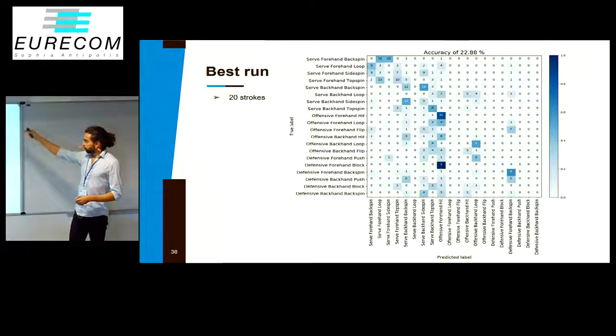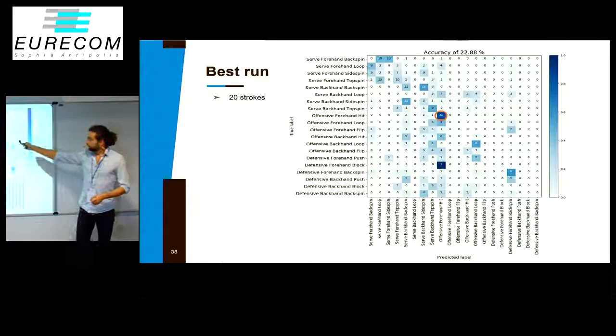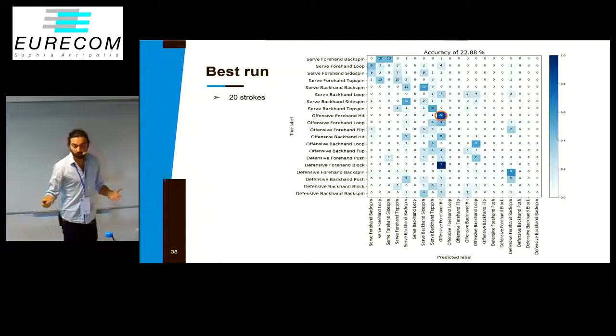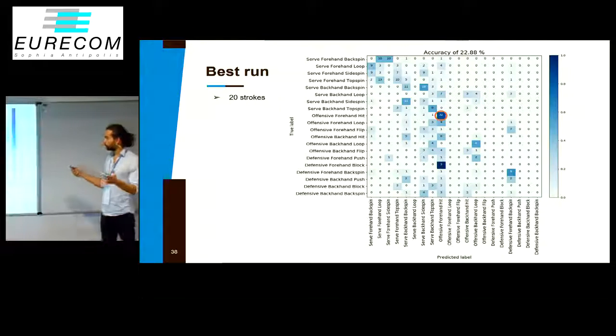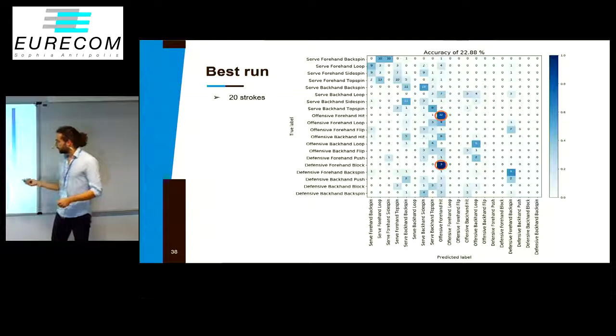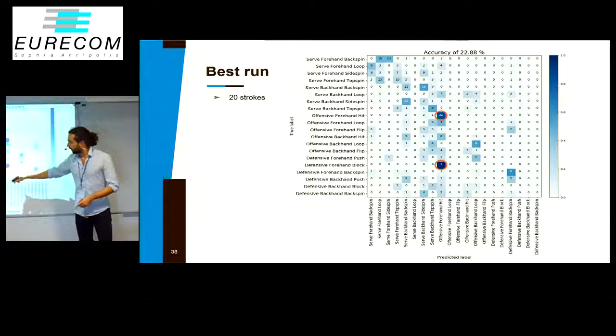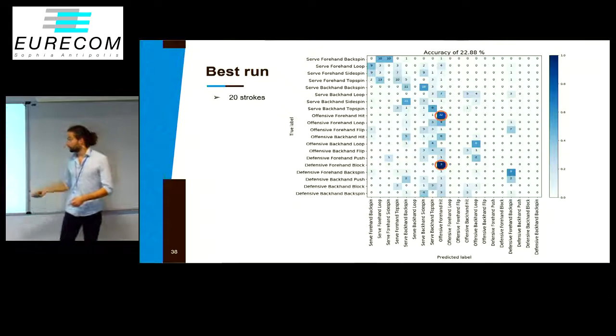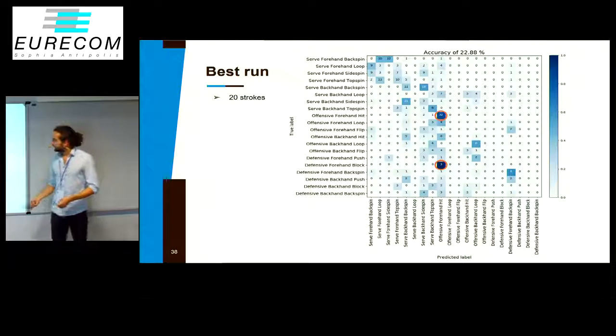Our best run obtained 23%. We've been very good with offensive forehand hit, which is a stroke that is very often used in the game. But maybe we did that too well because we also do the same thing with defensive forehand block, which is actually very different.